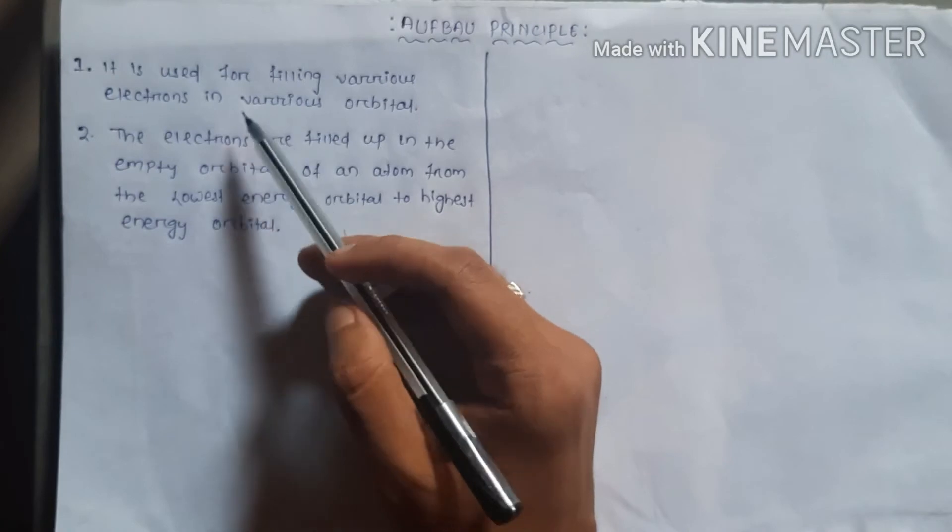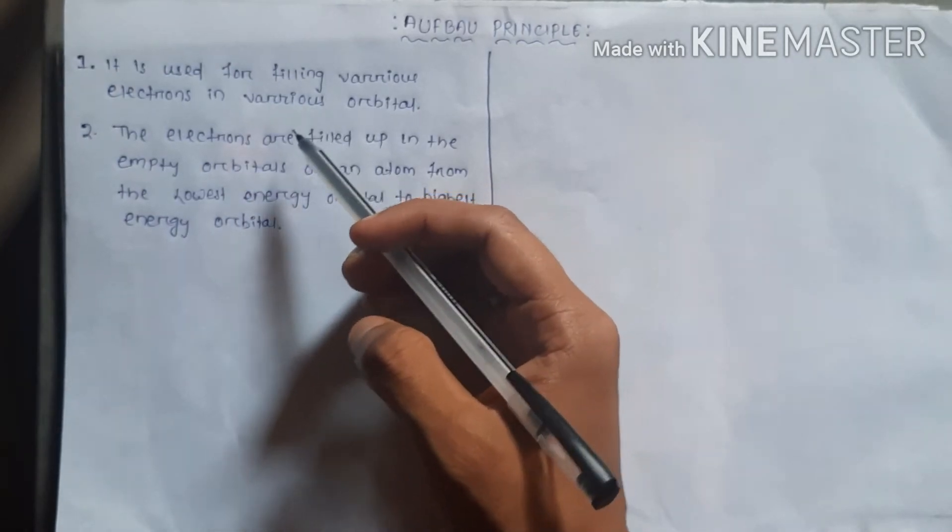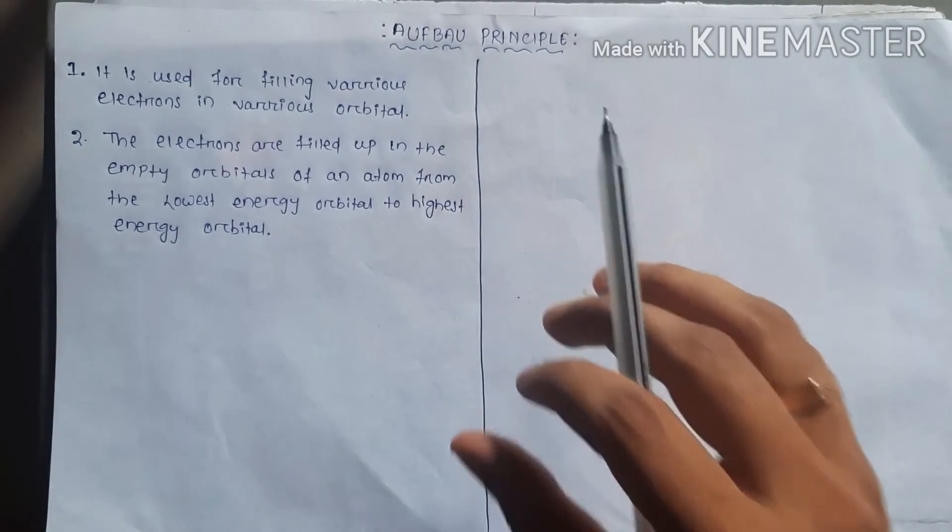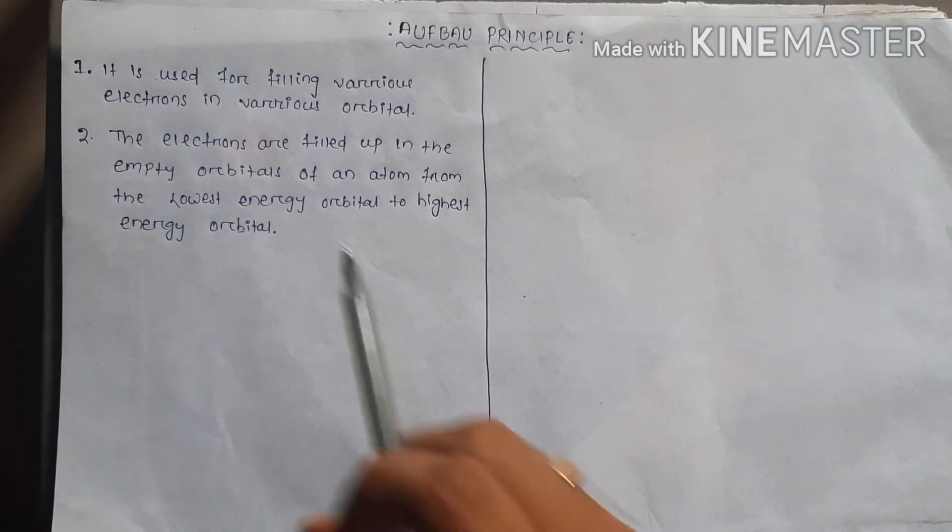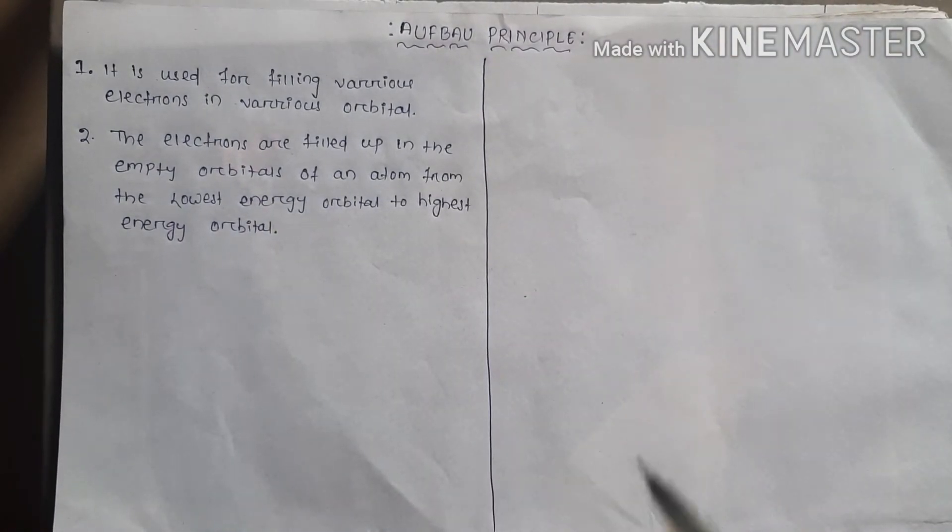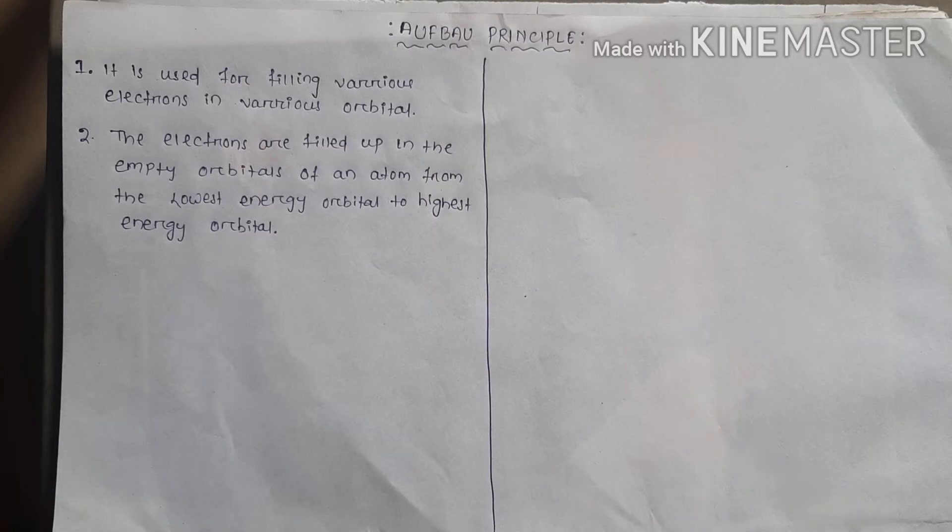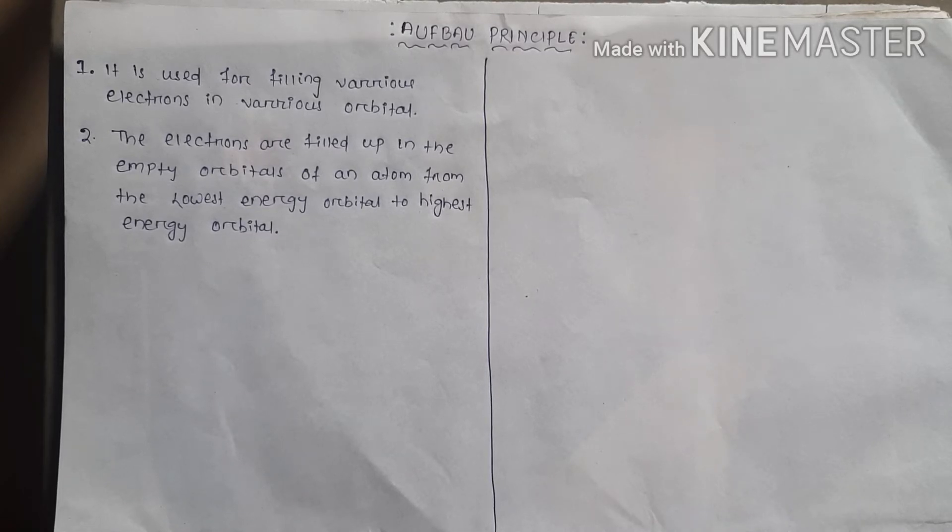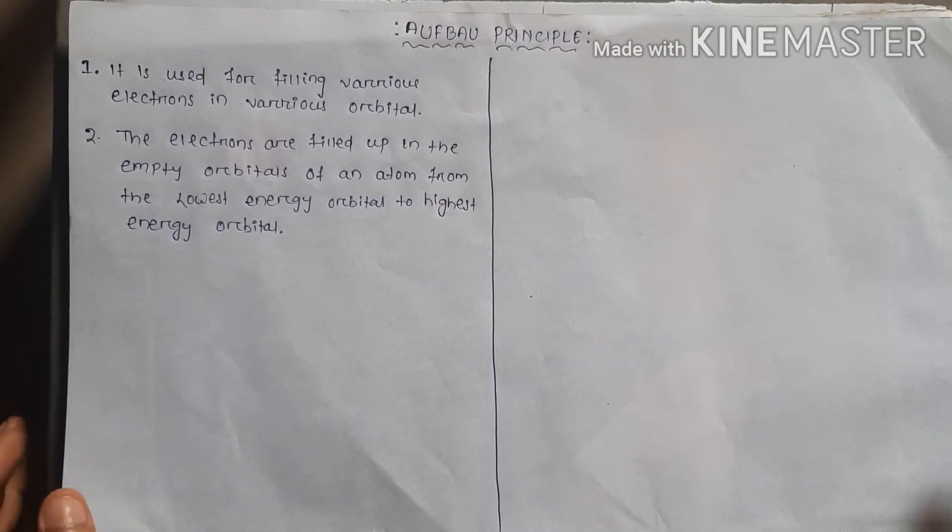It is used for filling various electrons in various orbitals. The electrons are filled up in the empty orbitals of an atom from the lowest energy orbital to highest energy orbital. So let us see how electrons are filled up.